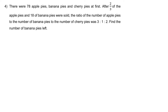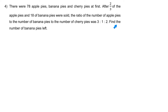Question 4. There are 78 apple pies, banana pies and cherry pies at first. After 2 thirds of the apple pies and 18 banana pies were sold, the ratio of apple pies to banana pies to cherry pies was 3 is to 1 is to 2. Find the number of banana pies left.